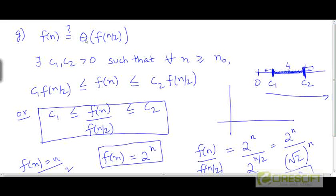So, if f had to be Θ of f(n/2), this must have been true. But it is not true for functions like this. For functions like this, if I put 2ⁿ here, 2ⁿ is not Θ of √(2ⁿ). If I put 2^(n/2) here, that's just √(2ⁿ).